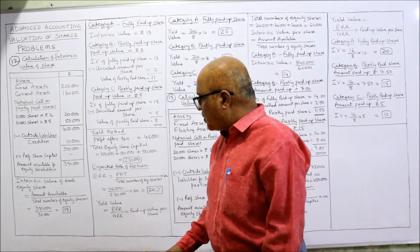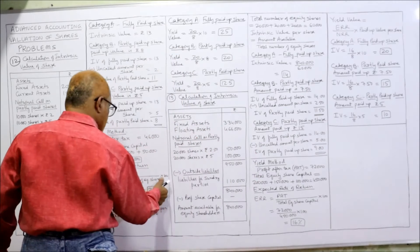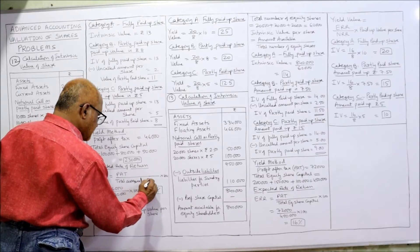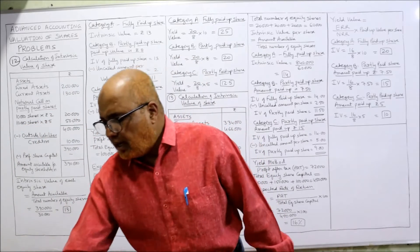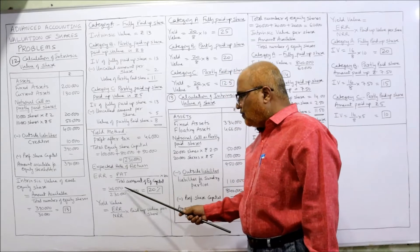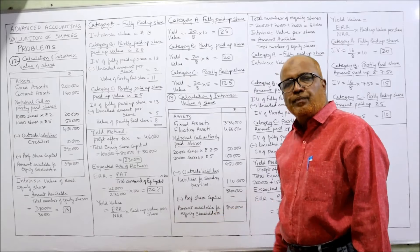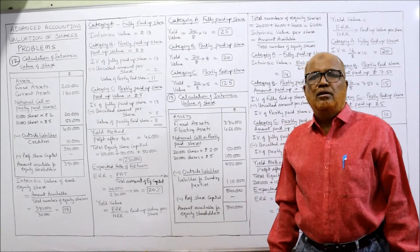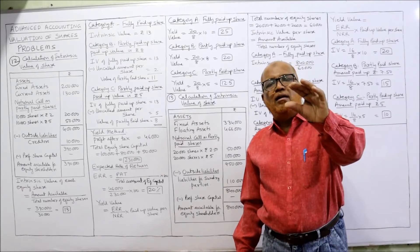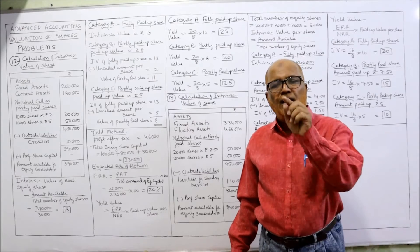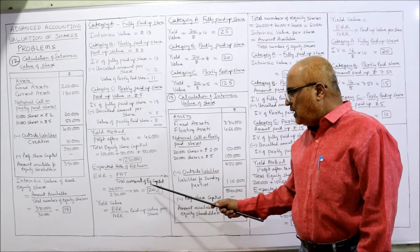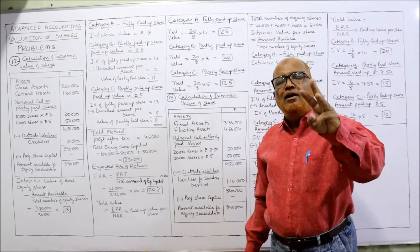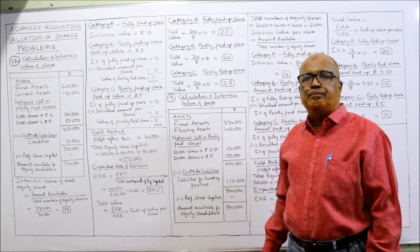ERR equals profit after tax divided by total amount of equity capital, multiplied by 100. So 46,000 divided by 2,30,000 into 100 = 20%. The expected rate of return is 20%. The formula for yield value of a share is: ERR divided by NRR, multiplied by paid up value per share. Here ERR is 20%, NRR is 8% as given. There are three paid up values: 10 rupees, 8 rupees, and 5 rupees.